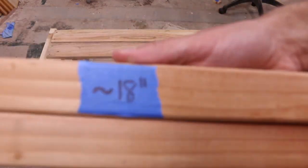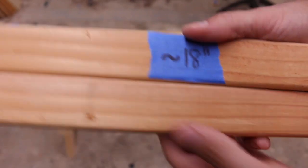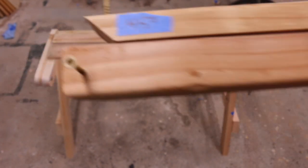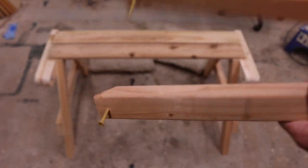These are my 18 inch supports down below cut at 45 degrees. I've pre-drilled them and we're going to attach them underneath here.